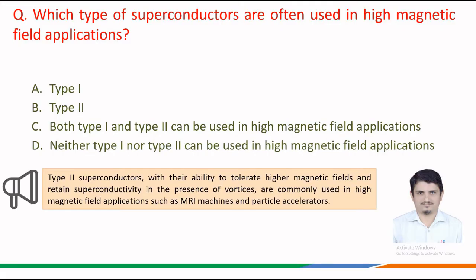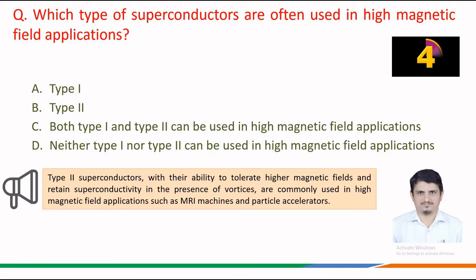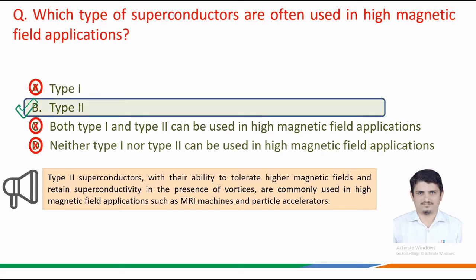We may recall that type 2 superconductors, with their ability to tolerate high magnetic fields and retain superconductivity in the presence of vortices, are commonly used in high magnetic field applications such as MRI machines and particle accelerators. Therefore, the correct answer is option b — type 2 superconductors are often used in high magnetic field applications.